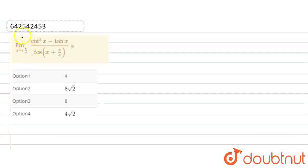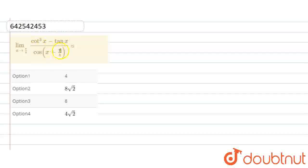Here, the question is given: limit x tends to pi by 4 of cot cube x minus tan x, divided by cos of x plus pi by 4. This is the question given.